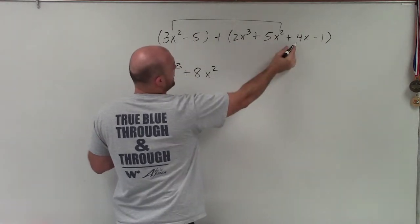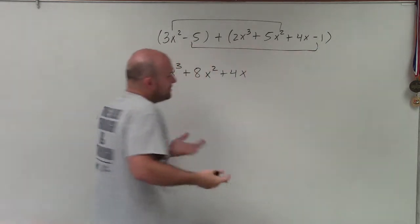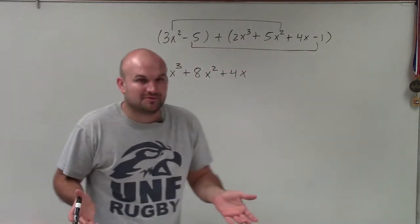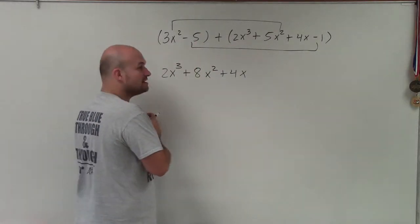There's nothing I can add with the 4x. There's no other like terms. And then here are my two constants. The two constants don't have any variables attached with them. They're just numbers we're adding. So that's negative 5 plus negative 1.